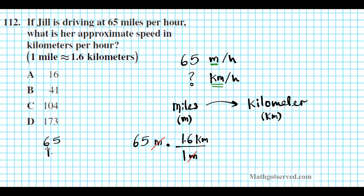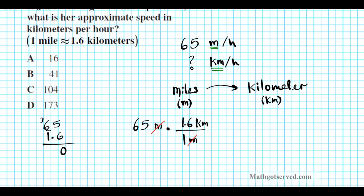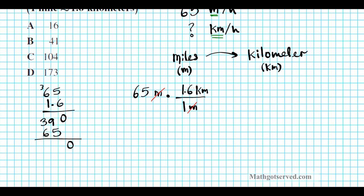This mile and this mile cancel out, and multiplying gives us the kilometer equivalent of 65 miles. 65 times 1.6: 6 times 5 is 30, carry 3; 6 times 6 is 36 plus 3 is 39; 1 times 5 is 5; 1 times 6 is 6. Adding: 9 plus 5 is 14, carry 1; 4 plus 6 is 10. Since there's only one digit behind the decimal point, we get approximately 104 kilometers per hour. Answer is option letter C.